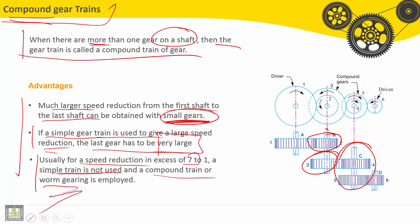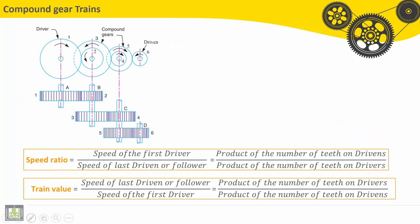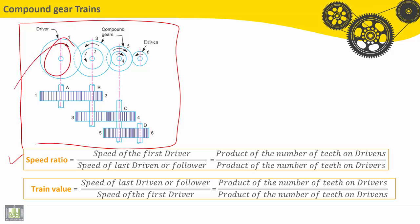Here we have on this figure compound gear train. So the speed ratio is equal to speed of the first driver divided by the speed of the last driven or follower. This is also equal to the product of the number of teeth on the driven...